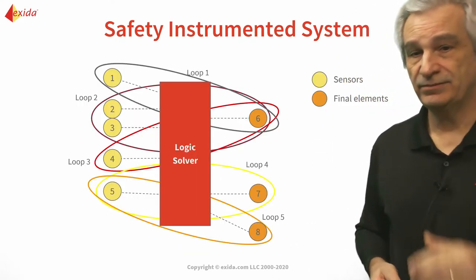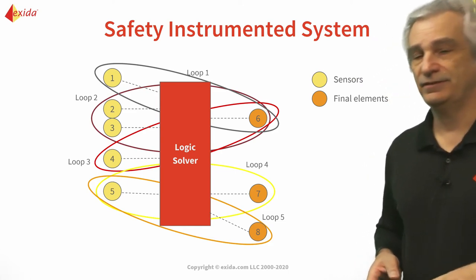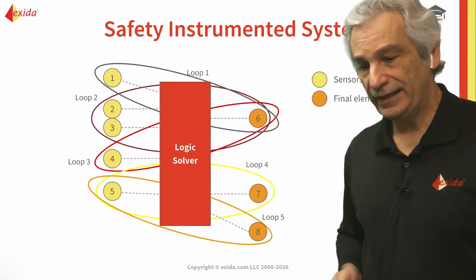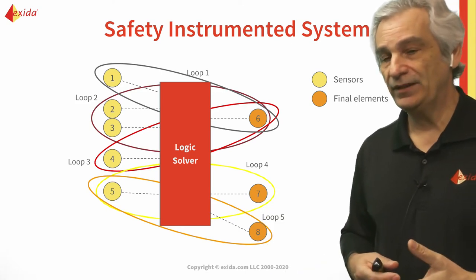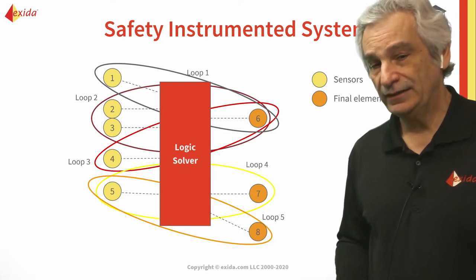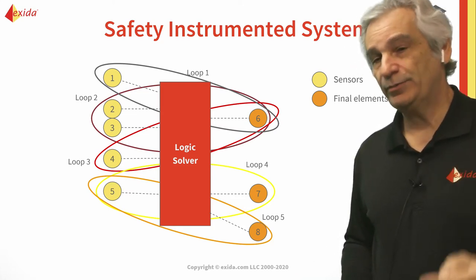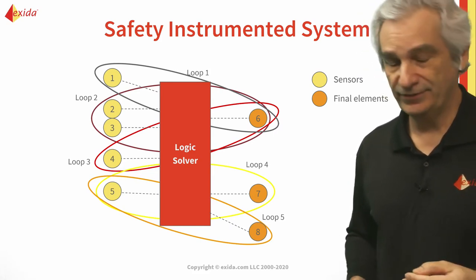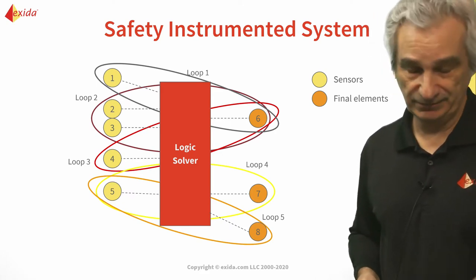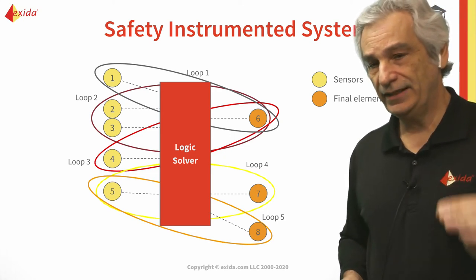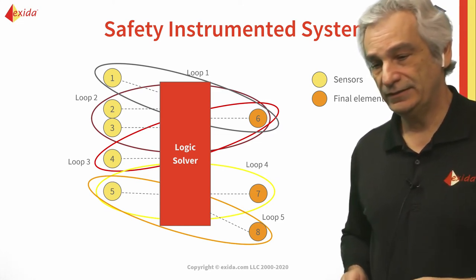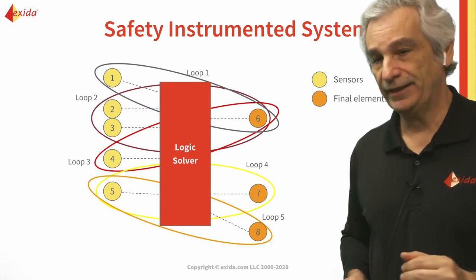When you look at the safety instrumented system, you could have different safety instrumented functions, and each of these is dealing with a single hazard. So you could have a situation with both high pressure and high temperature, but there will be two separate SIFs — one SIF to deal with the high pressure and one SIF to deal with the high temperature. That's the way we design it: a specific, single safety function to automatically bring us back to the safe state.